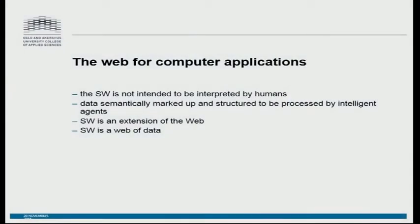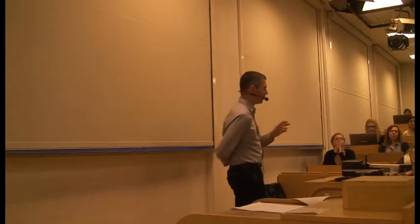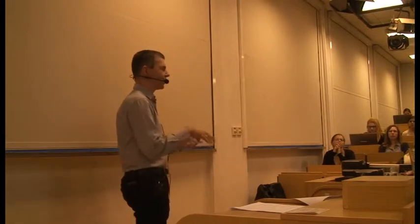The semantic web is the web for computer applications — it's not intended to be interpreted by humans. The data available on the semantic web should be used for interpreting and parsing by software tailored to understanding the data. The semantic web is an extension of the ordinary web because it builds upon the same infrastructure. The point is that it's a web of data rather than a web of documents.